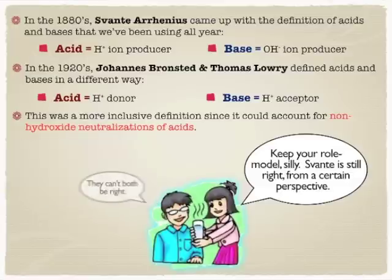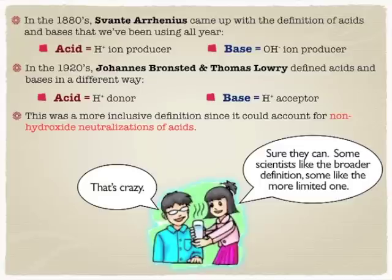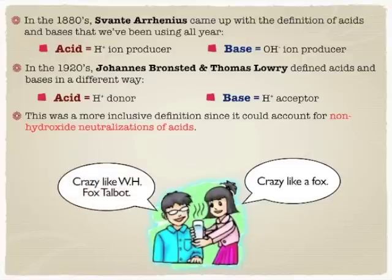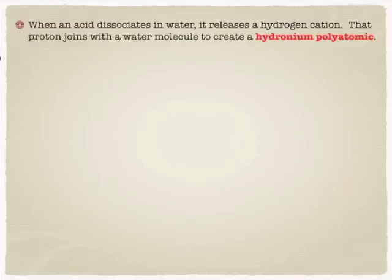There's nothing wrong with the idea of an Arrhenius acid and base — it just really depends on your perspective and how broad of a definition. In fact, it goes beyond that. Even Gilbert Lewis himself came up with a more inclusive definition of acids and bases that comes down to the idea of electron pair donors and acceptors. But we don't really need to worry about that at this level.